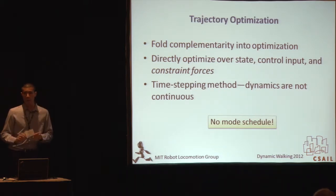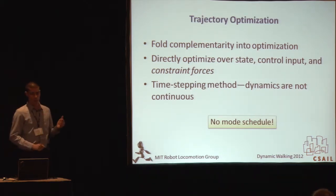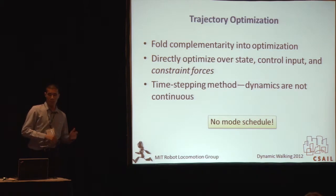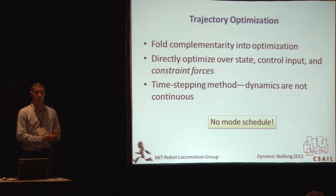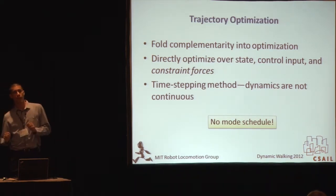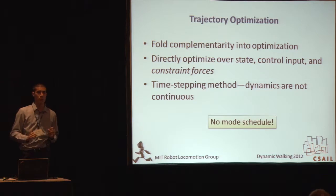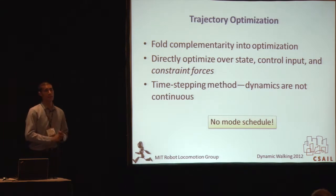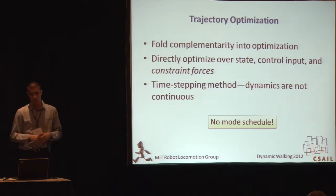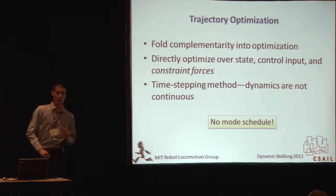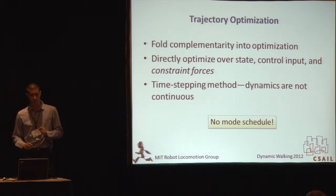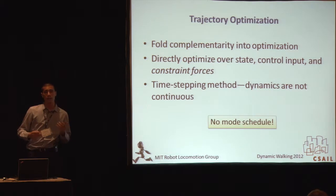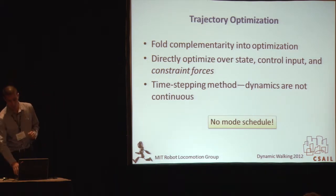What we'd like to do now is fold the complementarity into the optimization problem. We directly optimize over the state and control input as well as the contact forces, so those forces become optimization parameters in our program. This becomes a discrete-time (DT) system — we're looking at discrete time only, which works for us because the dynamics are not continuous anyway. The big takeaway is that we don't have a mode schedule anymore; everything is treated implicitly.